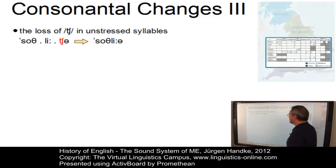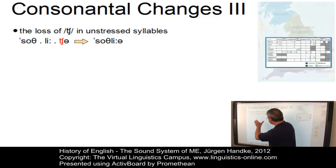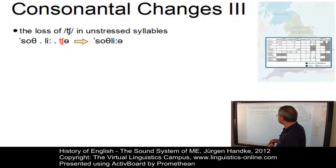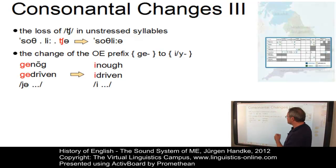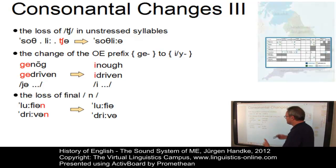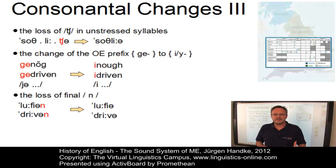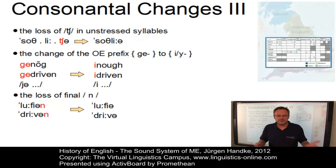Further consonantal changes include the loss of the voiceless post-alveolar affricate in unstressed syllables — for example, 'sōth-lī-ce' became 'sōth-lier'. Another typical change is the loss or replacement of the prefix 'ge-' by a simple vowel: 'genōh' became 'inōh', and 'gedriven' became 'idriven'. Finally, due to the leveling of unstressed syllables, final nasals were lost, typically in infinitives such as 'luvian' becoming 'luvie', or 'drīfan' becoming 'drīve'.